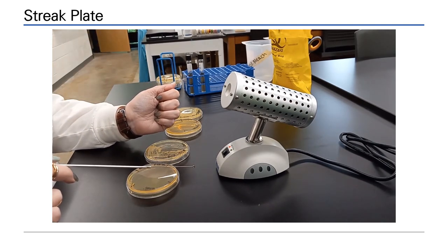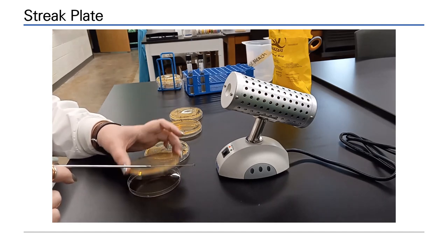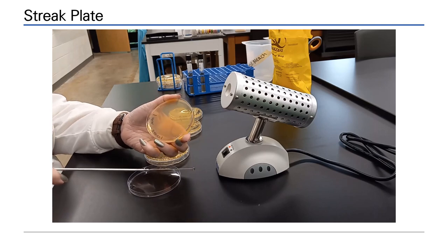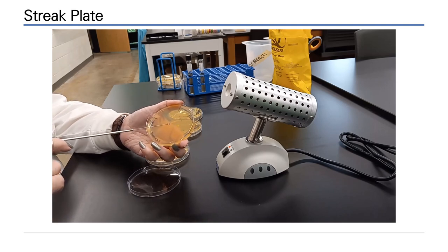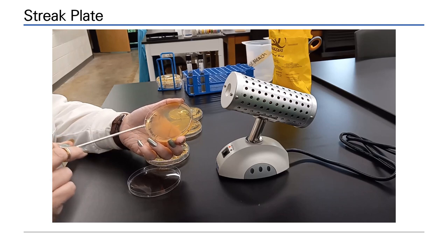Sterilize the loop again. Make sure it cools. Rock the plate so that you can see where your quadrant streak ended, and streak into the next section.